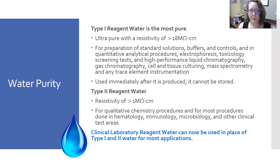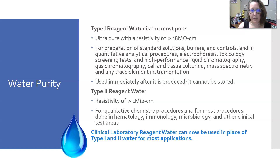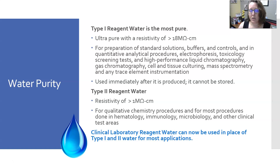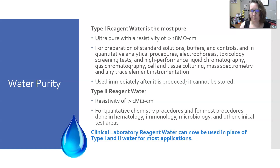Water can also be classified as Type 1, Type 2, Type 3, and even Type 4 based on purity. Type 1 reagent water is the most pure — it is considered ultra-pure, with a resistivity of greater than 18 mega-ohms per centimeter. It is used in the preparation of standards, buffers, controls, and quantitative analytical procedures, as well as in electrophoresis, toxicology screening, high-performance liquid chromatography, gas chromatography, cell and tissue culturing, mass spec, and any trace element instrumentation. It must be used immediately after it is produced and cannot be stored.